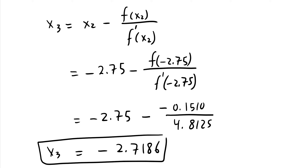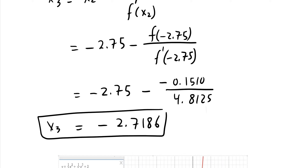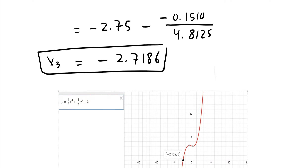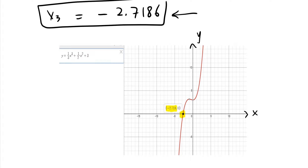We can stop at x₃ ≈ −2.7186 and say the function has a real zero at approximately −2.7186. It's good practice to go at least two steps: find x₂ then x₃; finding x₄ would be even better. I graphed the function on Desmos and the x-intercept is at −2.718 — very close to our approximation. It's a really good result.